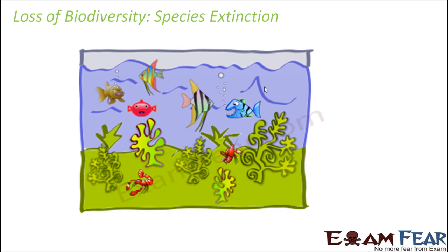To understand the loss of biodiversity, let us take an example of an aquarium — a glass box structure containing an entire aquatic environment with different types of fishes. Now, if we start taking out the fishes one by one each day, after a couple of days the aquarium will be empty with no fish left.